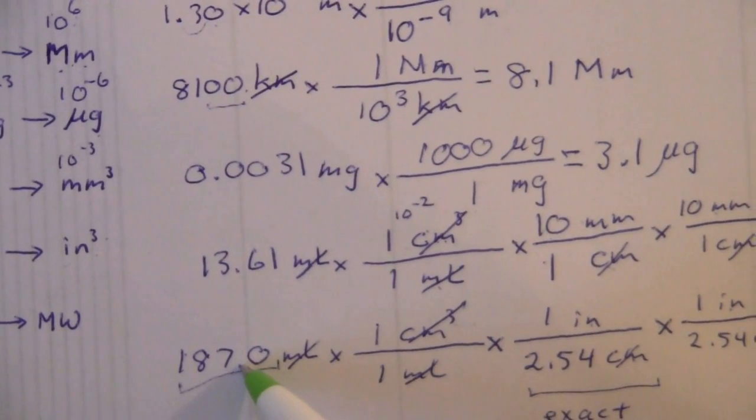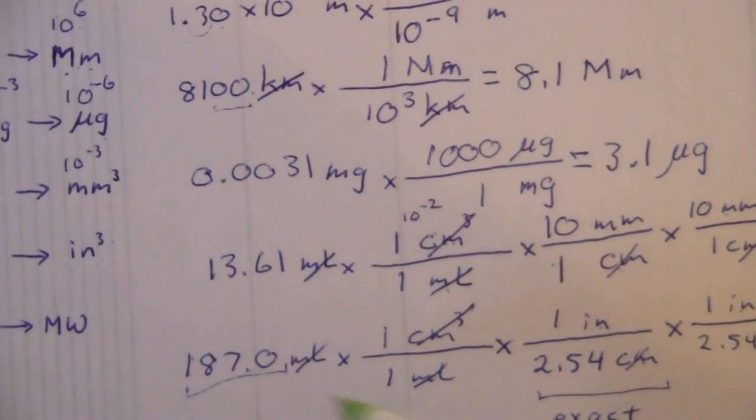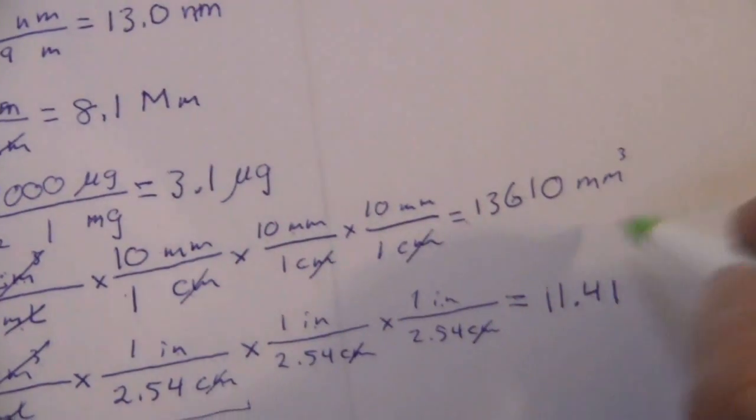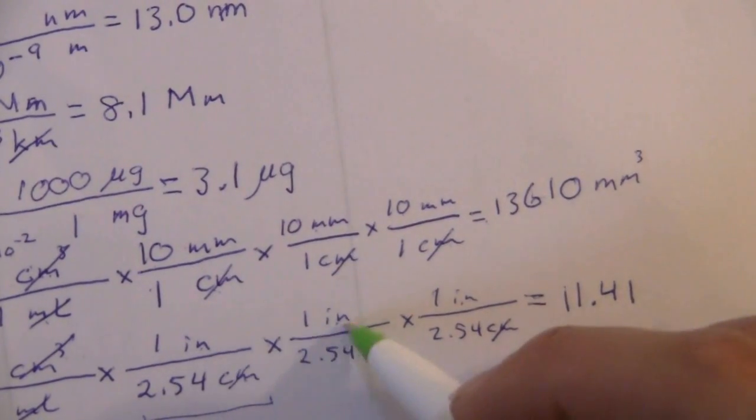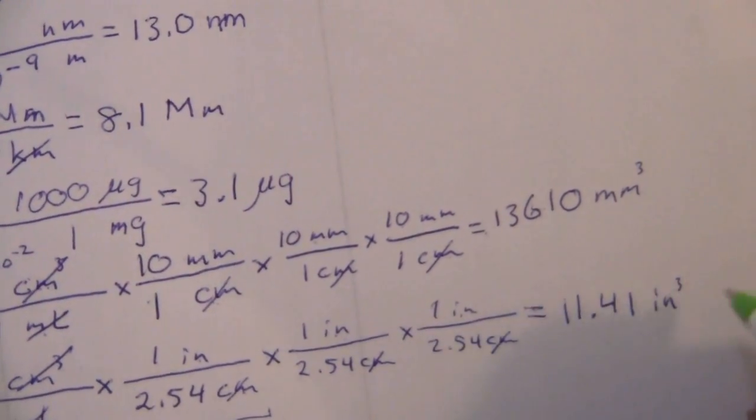We're just going to stop at 11.41 because we have four significant figures here. Remember the zero is after the decimal place—trailing zero after the decimal place—so that is significant. So we'll leave it with four significant figures here. Put in our units as inches cubed.